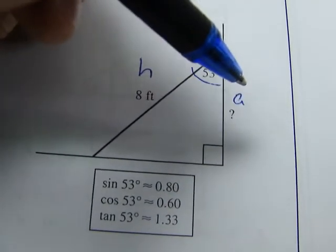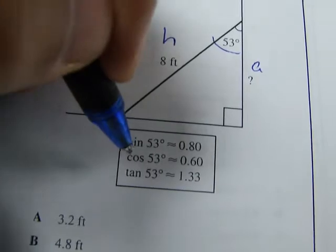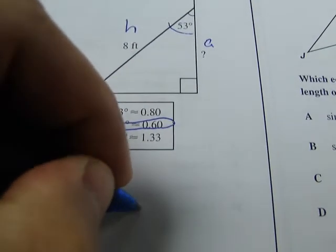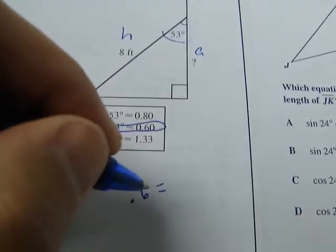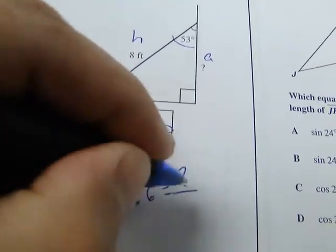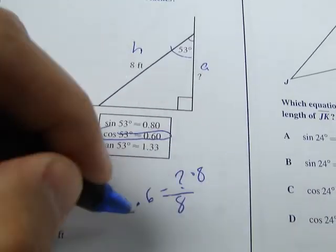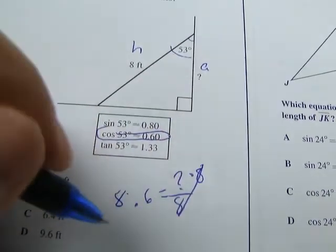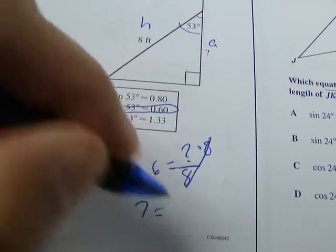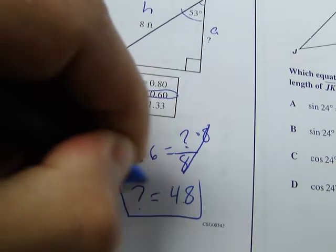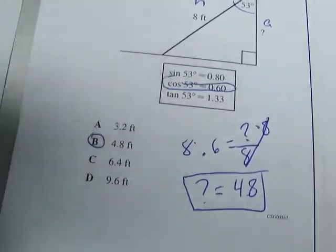So the type of problem we're going to be using is adjacent-hypotenuse cosine. So we're going to be doing cosine. So the cosine is 0.60. So in other words the cosine of 53 which equals .6 equals question mark over 8. So if we want to know what question mark is we're going to multiply both sides by 8. We get question mark equals 8 times .6 or 4.8. The answer is certainly B.